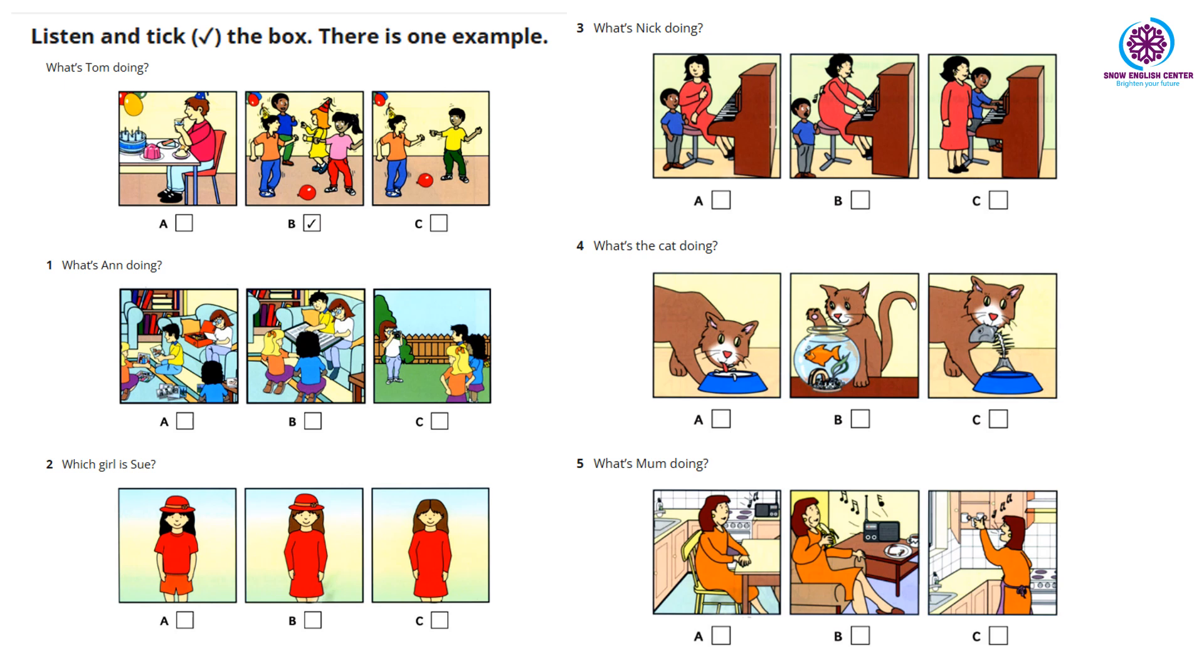Which girl is Sue? Has Sue got black hair? No, she hasn't. She's got brown hair. Is she wearing a dress? Yes, she is. And a red hat.